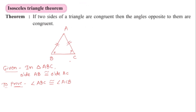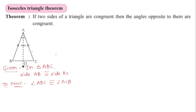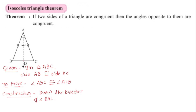For the construction: we draw a ray AD, which bisects angle BAC of triangle ABC. This creates two triangles in triangle ABC — triangle ABD and triangle ACD. We will consider these two triangles.